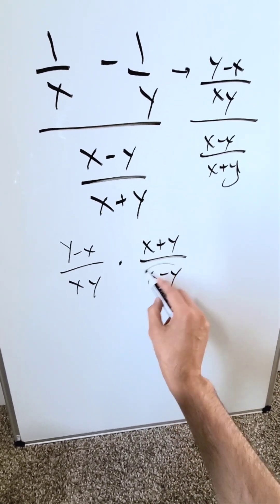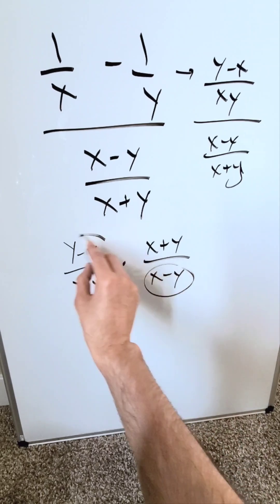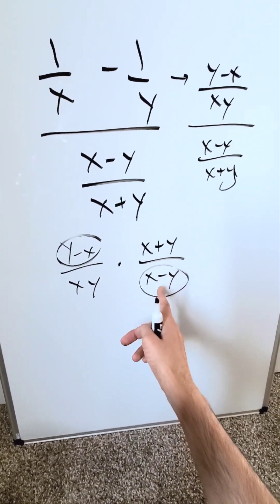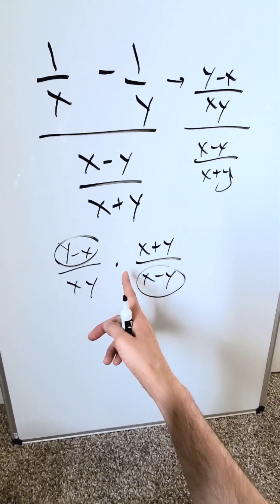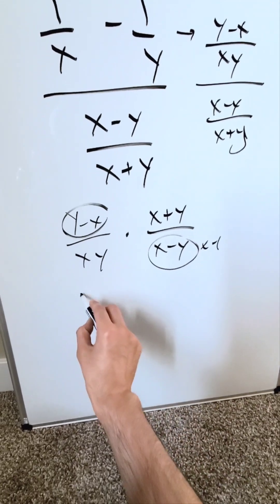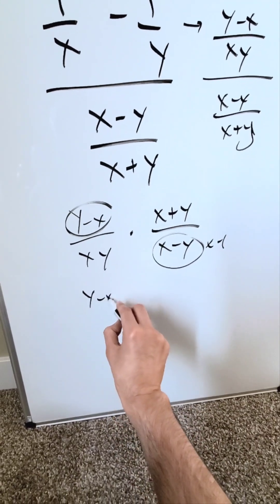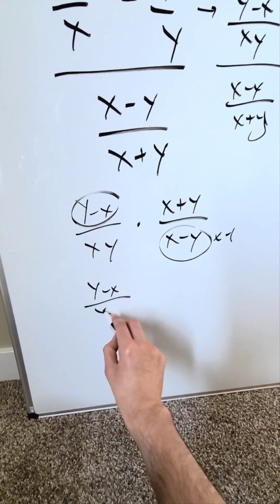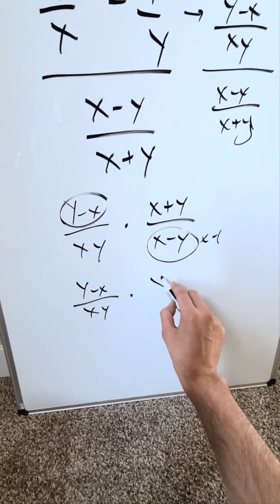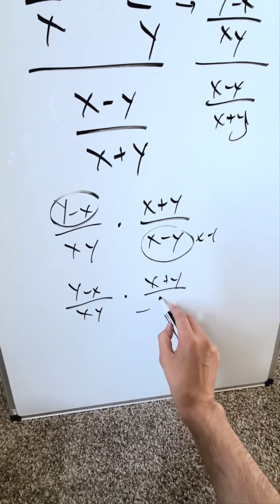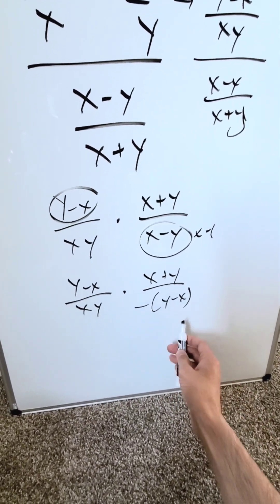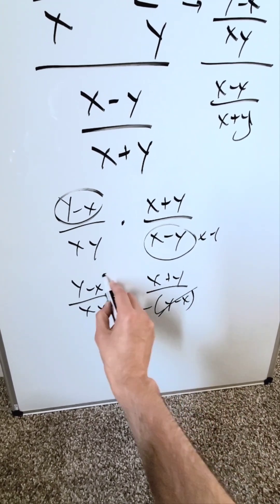Focus on this term and this term — they are basically the same except if you hit one with a negative one, it will flip around. I'm going to hit this with a minus one. I'm looking at y minus x divided by xy, times x plus y over a minus. I have y minus x, and this cancels out with this.